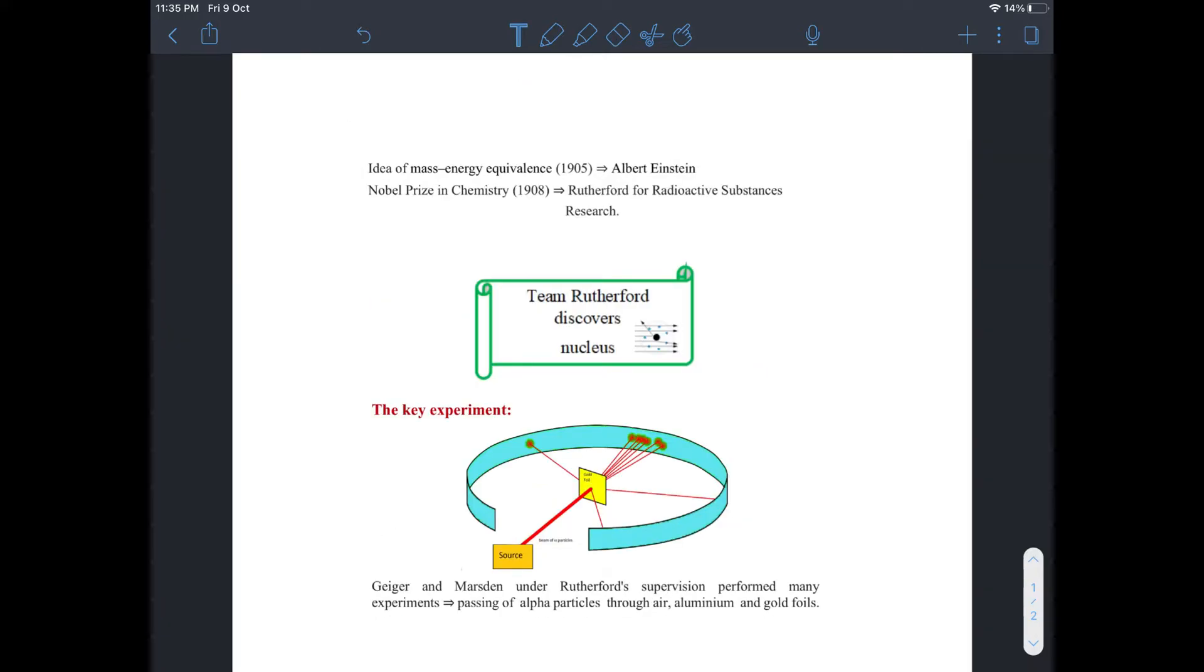Three types of radiations emanating from the atoms had been discovered: alpha, beta, and gamma radiation. The idea of mass-energy equivalence was given by Albert Einstein in 1905. Nobel Prize in Chemistry was given to Rutherford for his discovery of radioactivity in uranium salts.